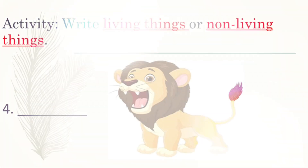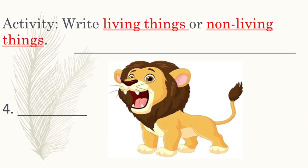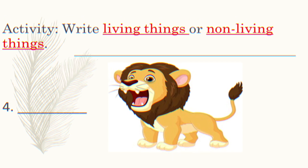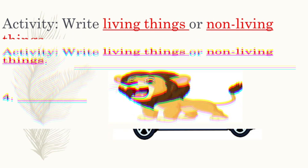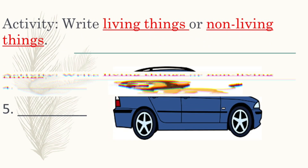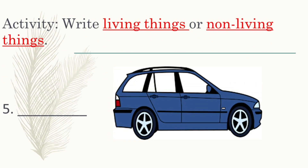Number four is a lion. Is a lion a non-living thing or a living thing? And the last one, number five, is a car. Is a car a living thing or non-living thing?